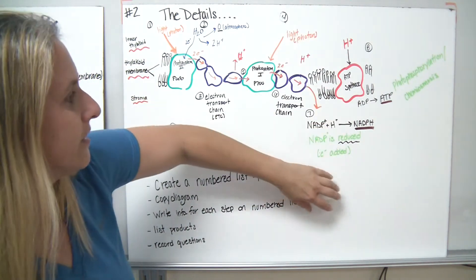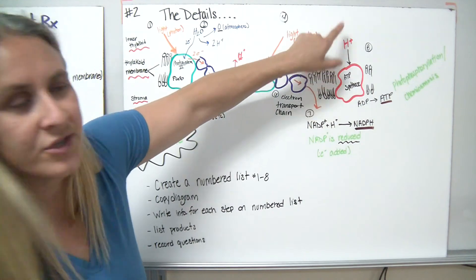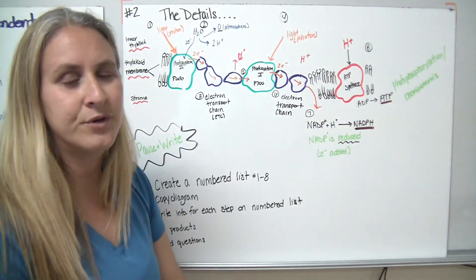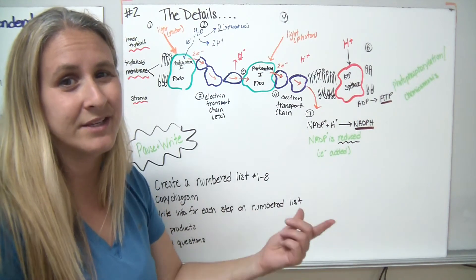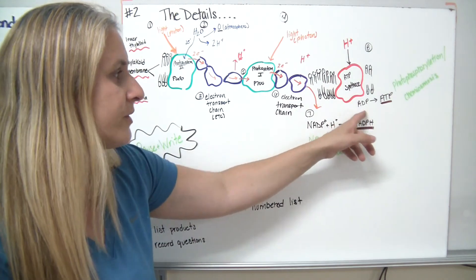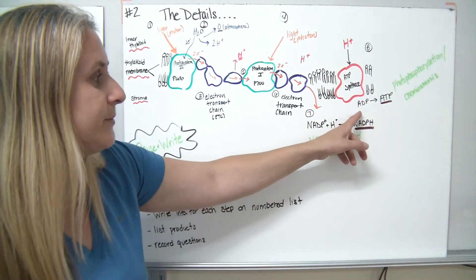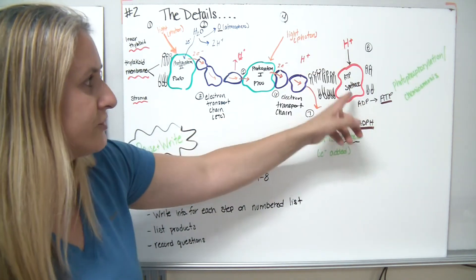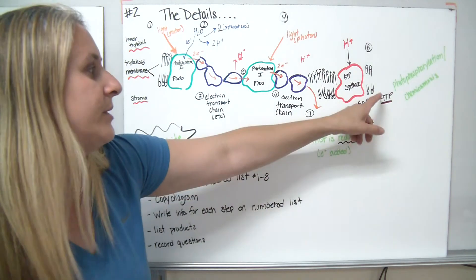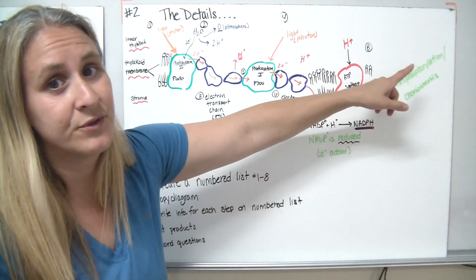So we have this gradient here. We had a lot of pluses on this side. We're going to have electrons on this side. Step eight, those H's now are going to be used in order to transform something called ATP synthase. Remember ASE is going to tell us that we have an enzyme. So in this case, this is where we're actually creating ATP from ADP. We're adding that using the energy from the hydrogens in order to add that last phosphorus to ADP to turn it into ATP.